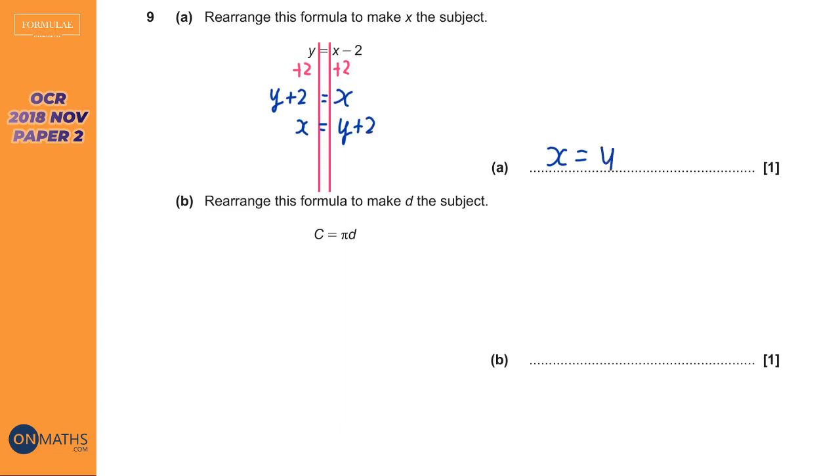It's the same with this next one. This is a formula, this is the circumference of a circle, and this time we need to make d the subject. Now the thing that's stopping d from being on its own—I might just draw this a little bit bigger so we can see—so we've got C equals π times d.